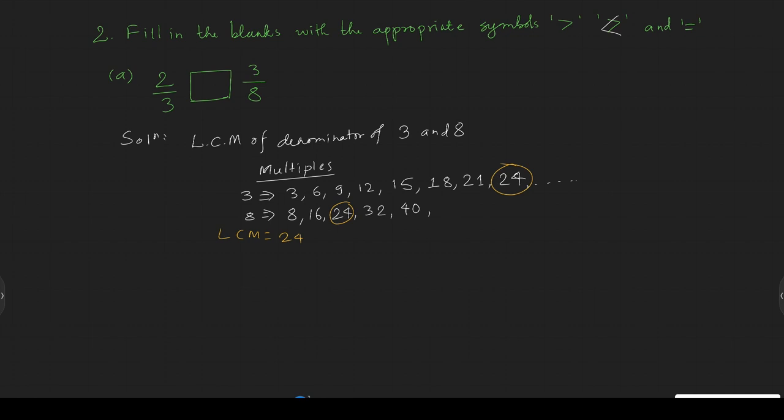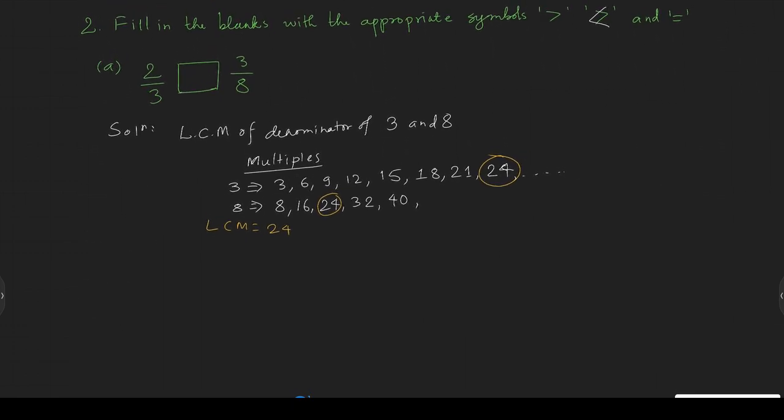Which fraction equals 24? So this is 2 by 3 and 3 by 8. What is this 2 by 3? How many times can you multiply to get 24? 8. 3 times 8 equals 24.